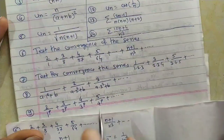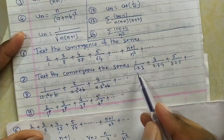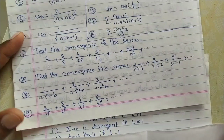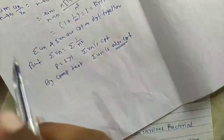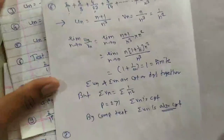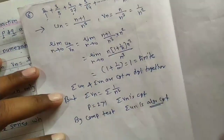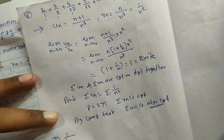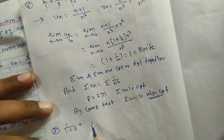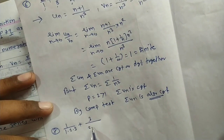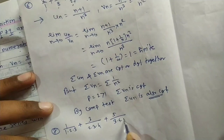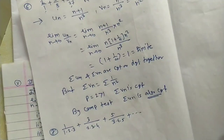Problem 7 (very important): Test the convergence of the series 1/(1·2·3) + 3/(2·3·4) + 5/(3·4·5) + ... We write this series out: u1 = 1/(1·2·3), u2 = 3/(2·3·4), u3 = 5/(3·4·5), and so on.